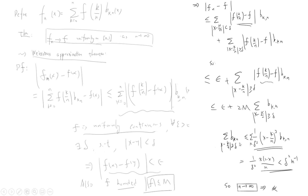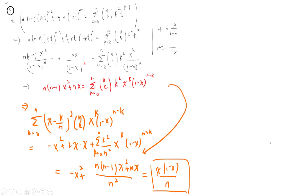The difficult part is bounding the second term. Since |x - k/n| ≥ δ, we have (x - k/n)^2 / δ^2 ≥ 1, so the sum over those k of b_{k,n} is less than or equal to (1/δ^2) times the sum over all k of (x - k/n)^2 times b_{k,n}. By the third lemma, this full sum equals x(1-x)/n, which is at most 1/(4n).